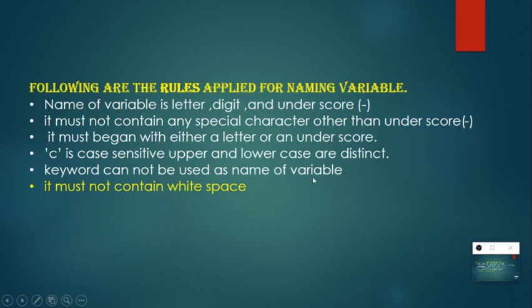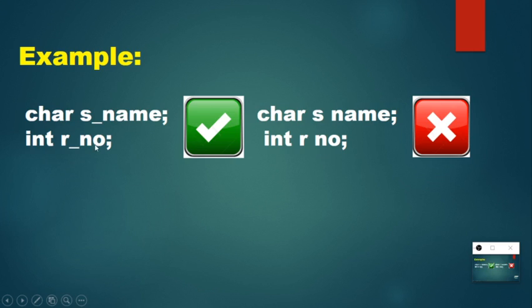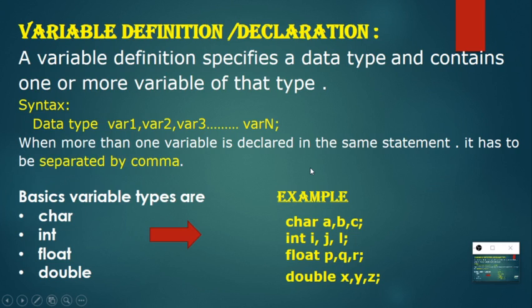There is another rule: variable names must not contain white space. For example, 's_name' is okay, but 'char s name' with a space is not accepted. You can write 'int r_name', but you cannot write 'int r number' with a space. So white space is not accepted in C language variable names.